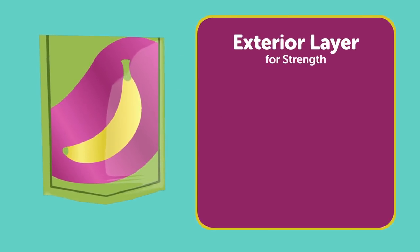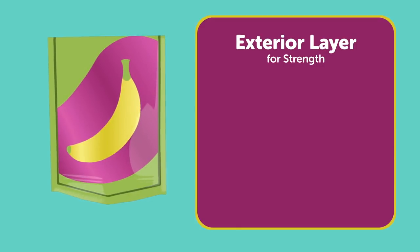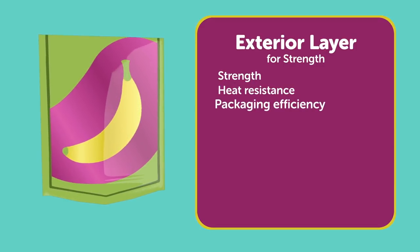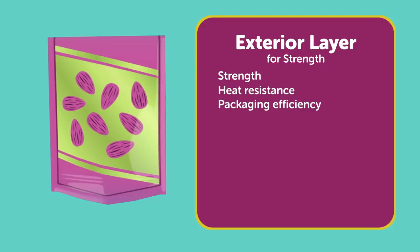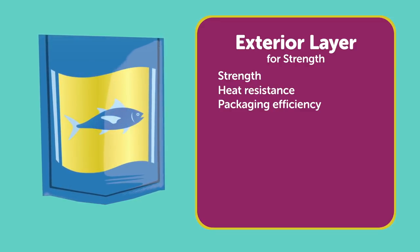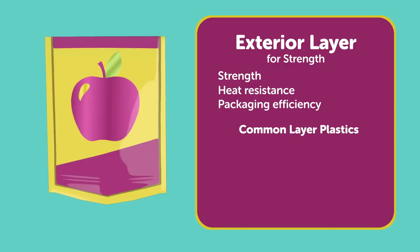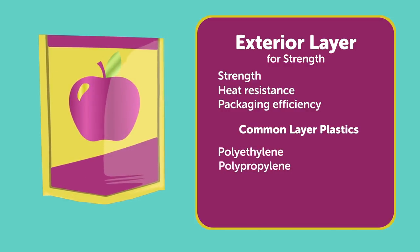The exterior layer provides strength, heat resistance, and packaging efficiency. It also provides a printable surface for nutritional and ingredient information and branding. Some common exterior layer plastics include polyethylene and polypropylene.